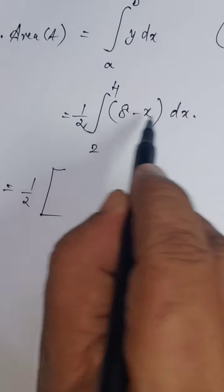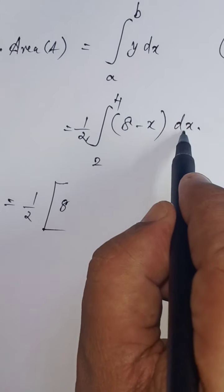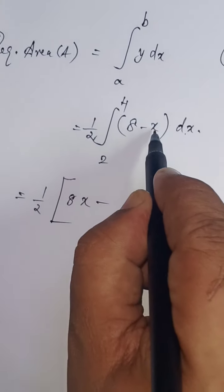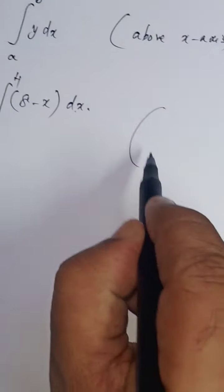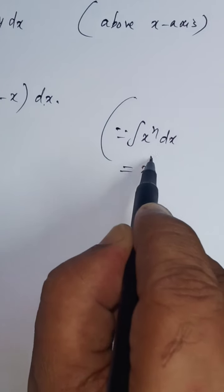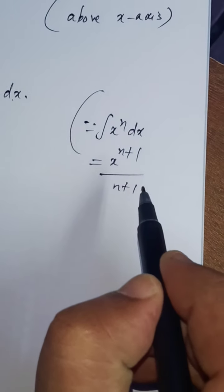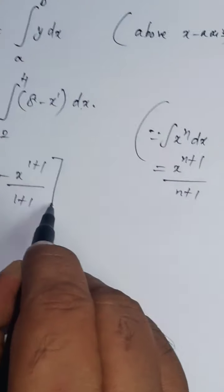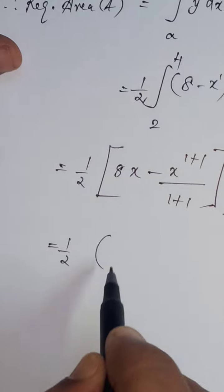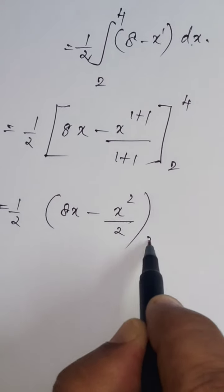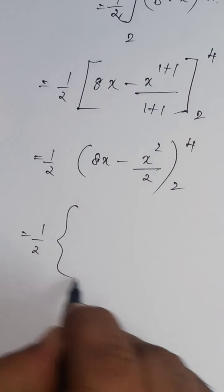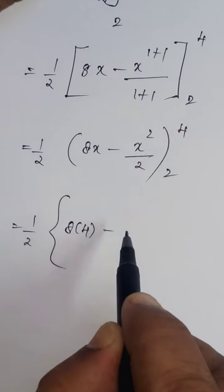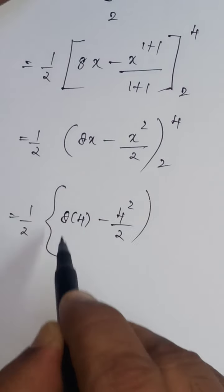Integrating: 8 dx gives 8x, and x dx gives x squared over 2, using the formula for x to the power n. So the expression becomes one-half times [8x minus x squared over 2] evaluated from 2 to 4. Applying the upper limit x equals 4: 8 times 4 minus 4 squared over 2 gives 32 minus 8.